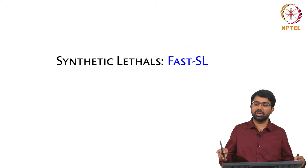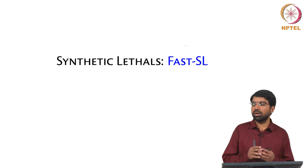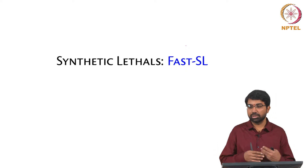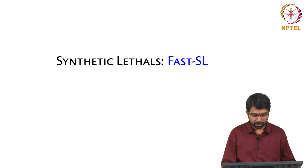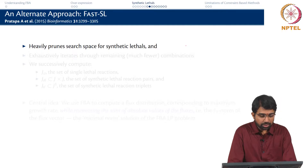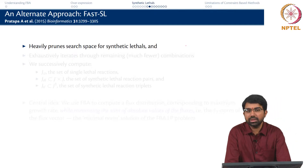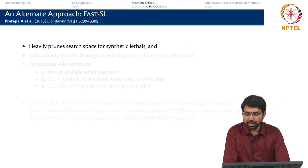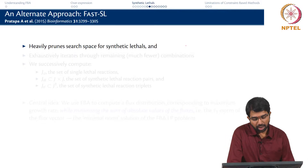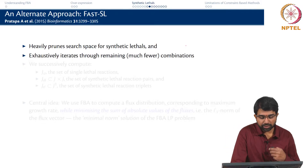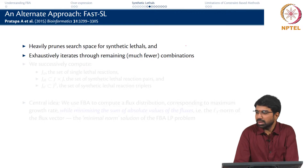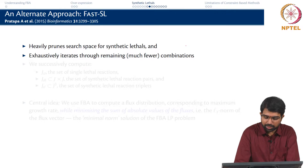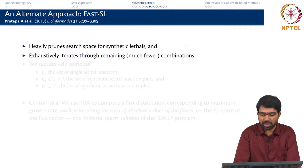So instead of solving 170 million LPs, we end up solving a few hundred thousand LPs. That gives you phenomenal savings in time and computation power. Our approach involves heavily pruning the search space, and we then exhaustively iterate through the remaining combinations. So it is in some sense related to exhaustive enumeration but involves computing only a very small fraction of the exhaustive set.